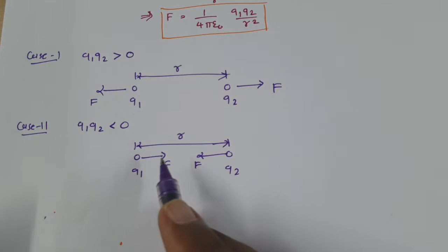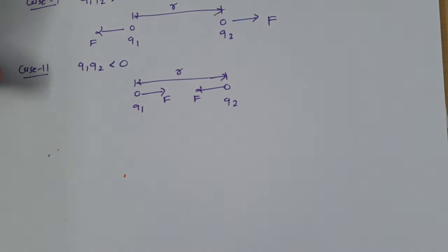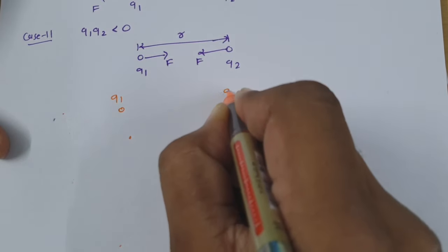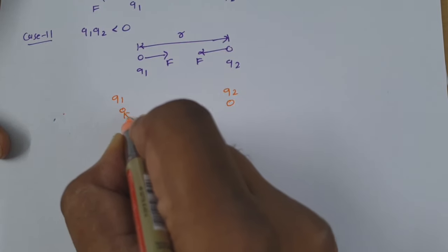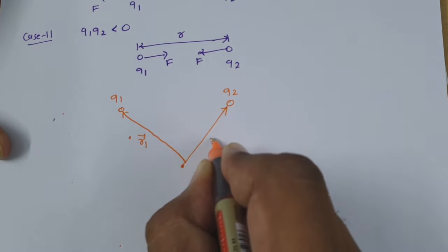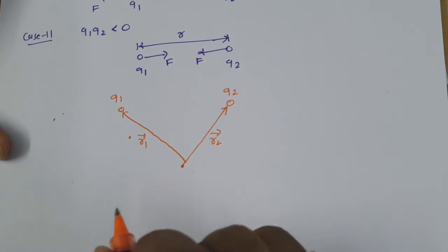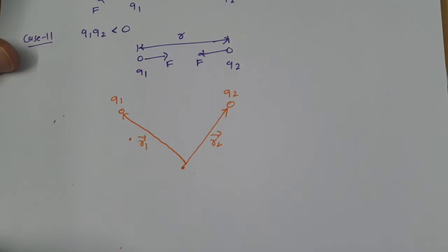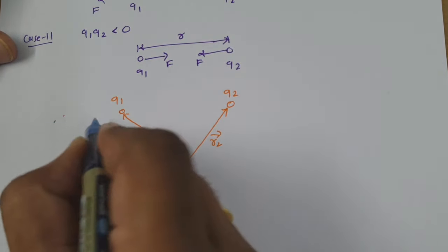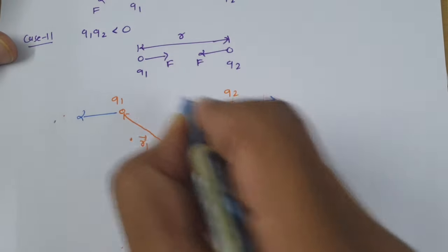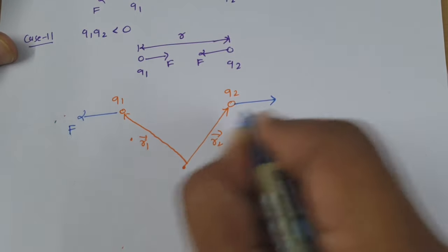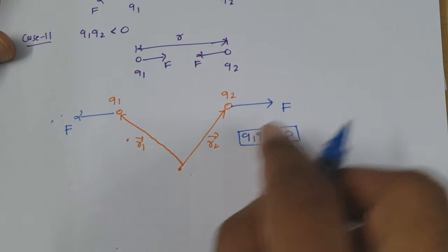Now let us understand this with respect to direction, so it will be more clear. If we have two charges Q1 and Q2, where Q1 is indicated by position vector R1 and Q2 is indicated by position vector R2, and Q1 and Q2 both are having the same polarity, then there will be repulsive force. Here I am considering the case Q1 × Q2 greater than zero, so there will be repulsive force. Now how to calculate this repulsive force by direction?